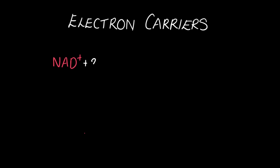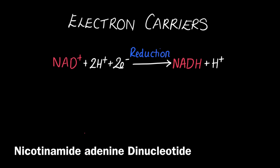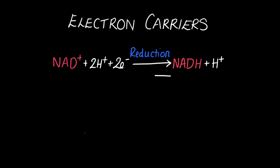Cell respiration involves both oxidation and reduction of electron carriers. The first and most common is NAD+, which stands for nicotinamide adenine dinucleotide. When NAD+ combines with two hydrogen ions (H+) and two electrons, it produces NADH plus a hydrogen ion — this is reduction because electrons are gained. Going in the other direction, NADH and a hydrogen ion produces NAD+ plus two hydrogen ions and two electrons — this is oxidation because electrons are lost.